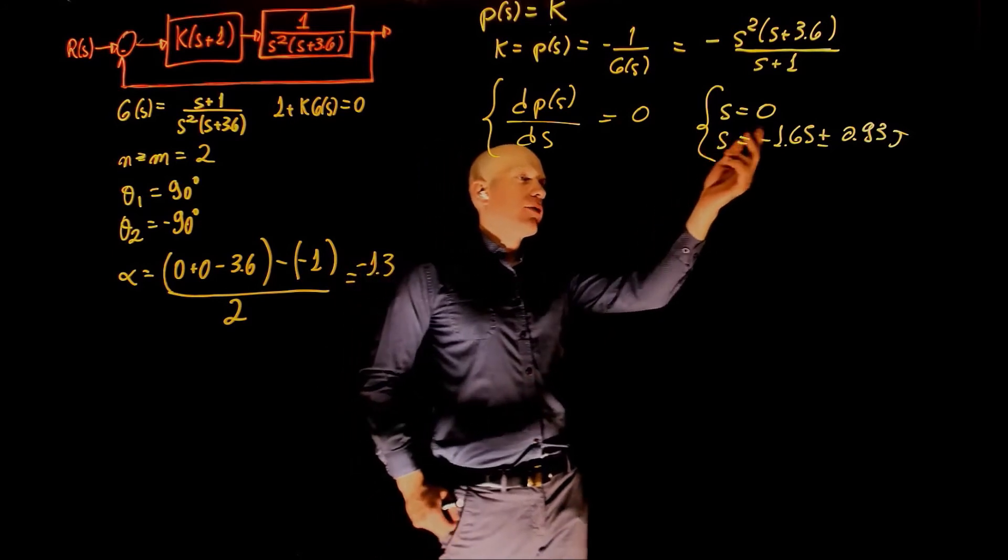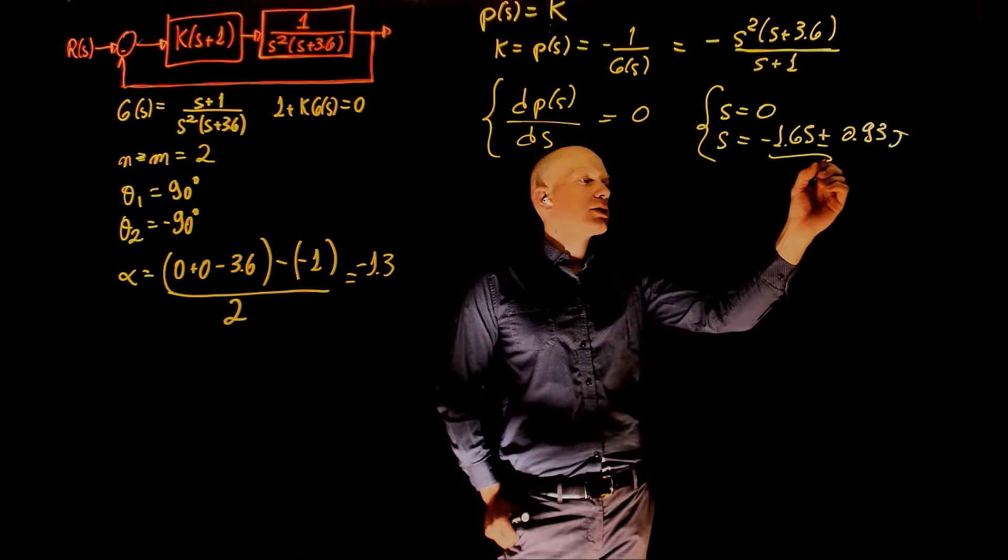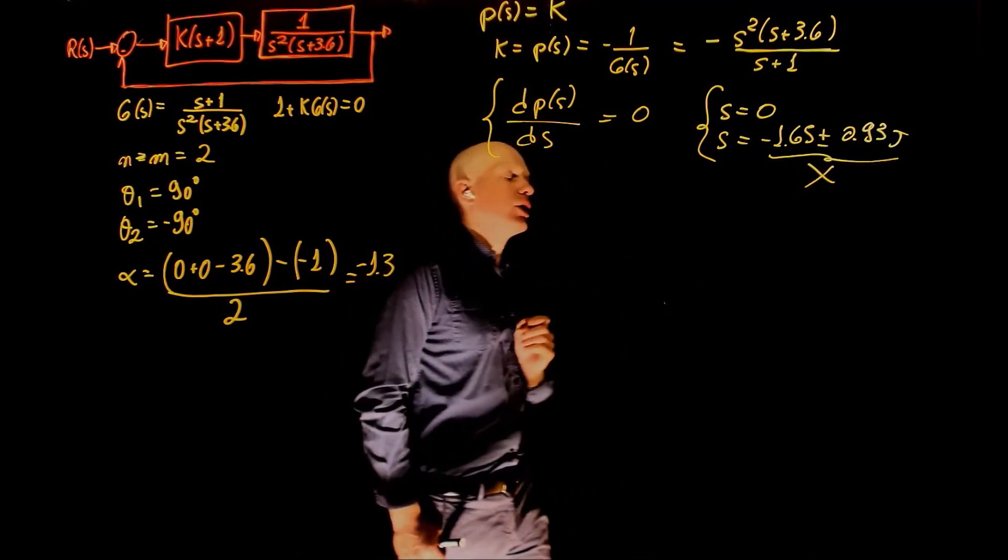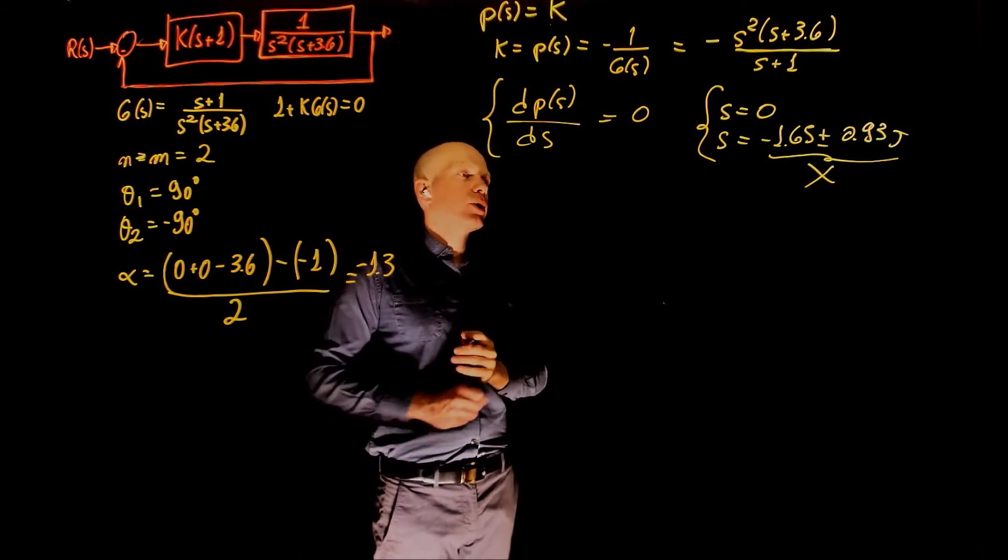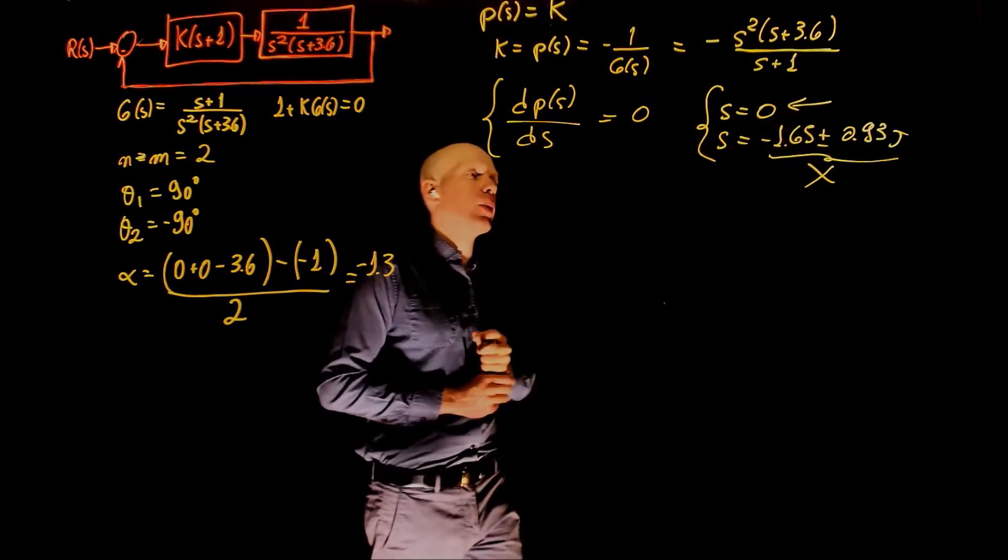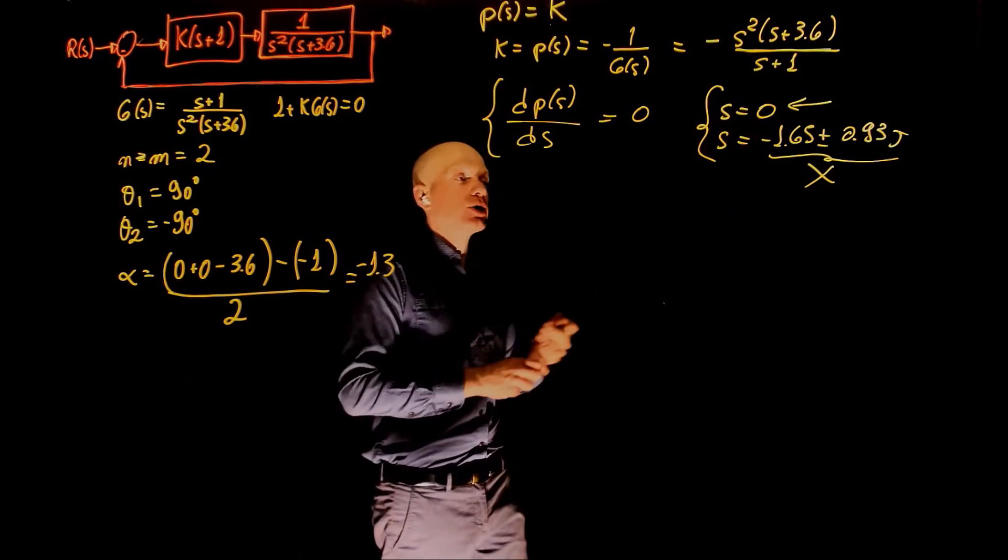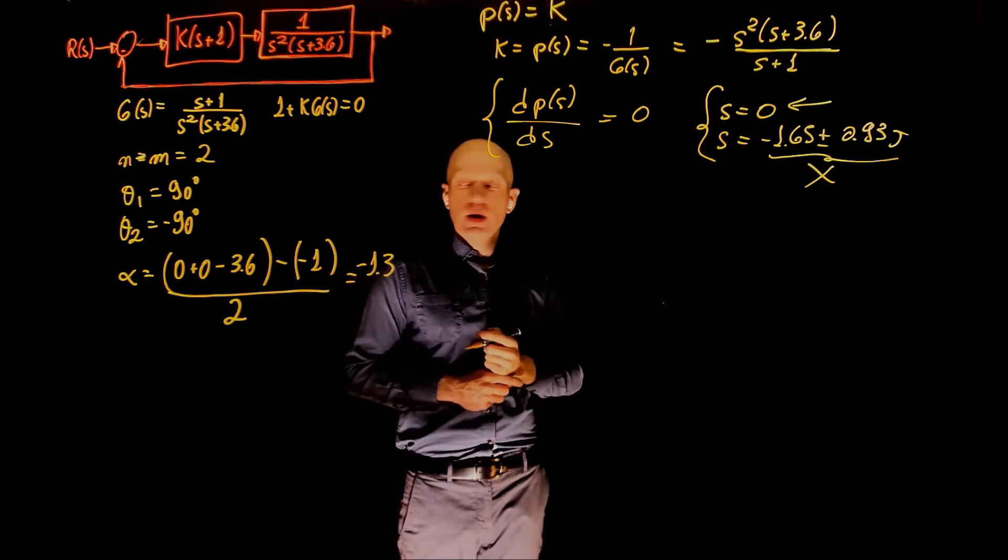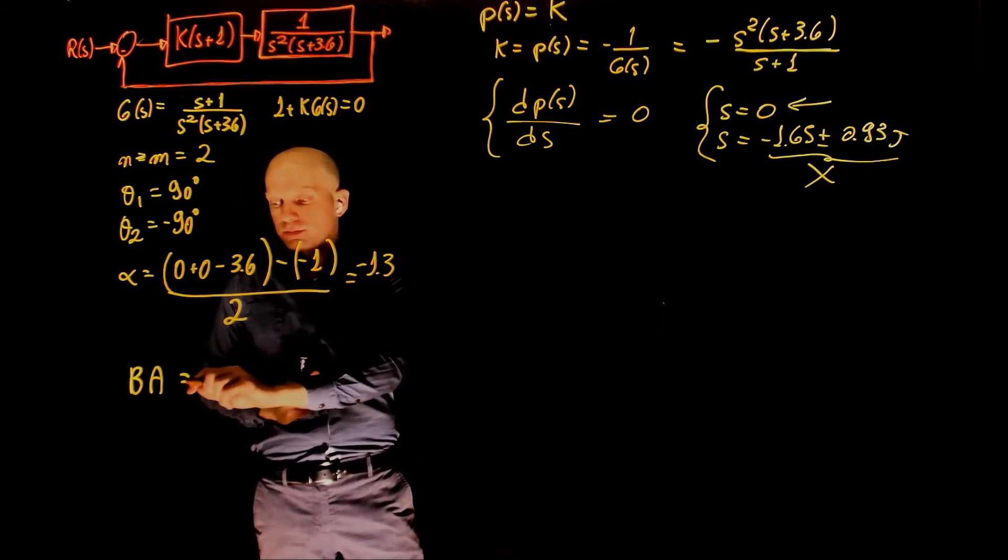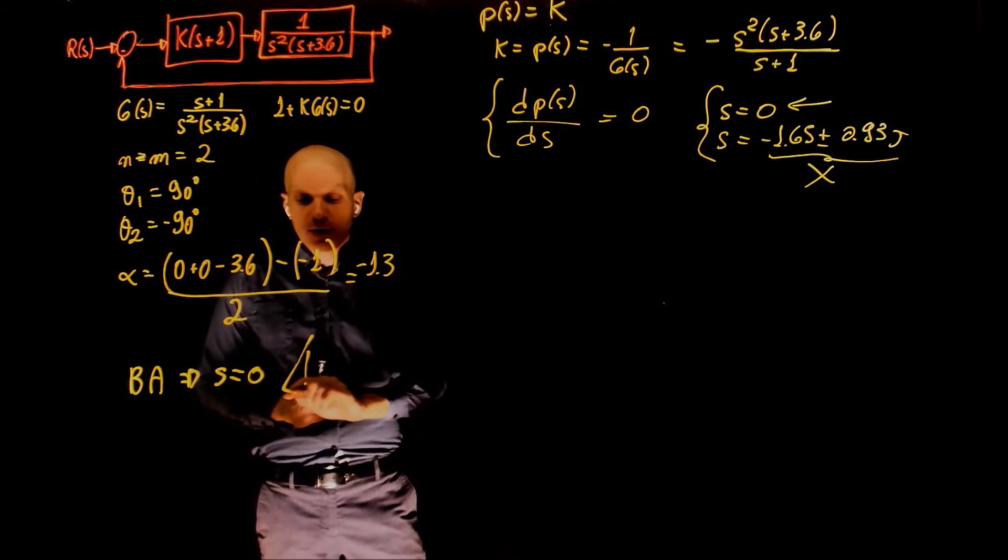What do we see here? We see a value of s equal to 0, that's a real number, and we see a complex number here. So this is not a breakaway or breaking point. We know that breakaway and breaking points are always real numbers. We have s equal to 0 as a potential breakaway or breaking point. We now need to determine whether s equals to 0 is part of the root locus or not. Our potential breakaway point is s equals to 0. We still need to verify this assumption.